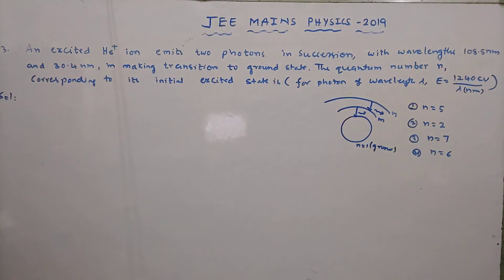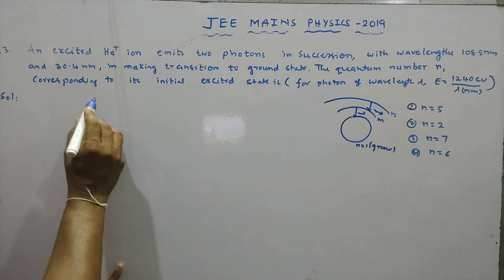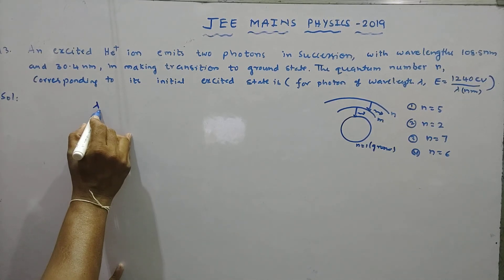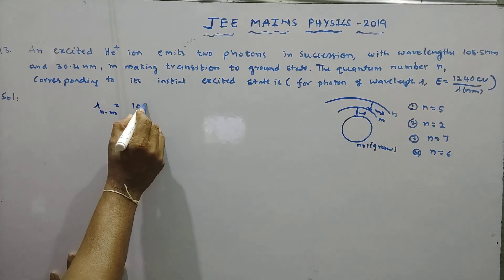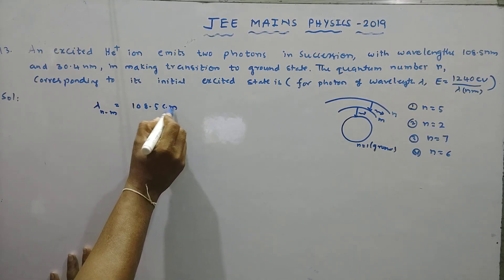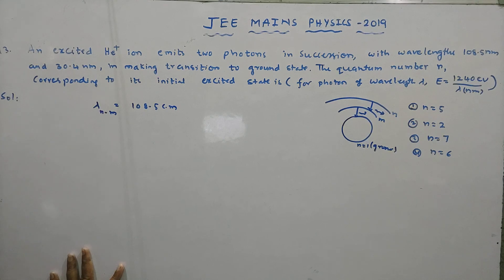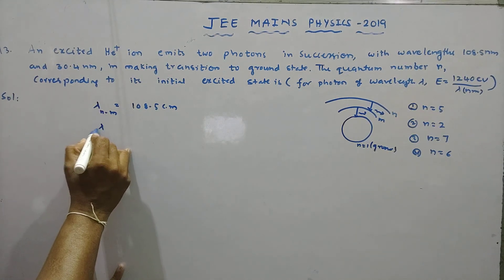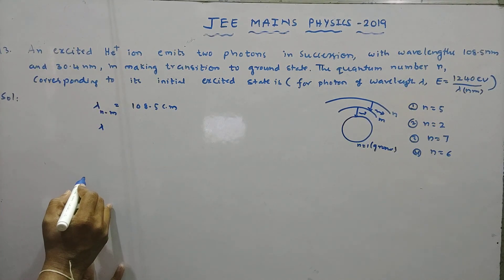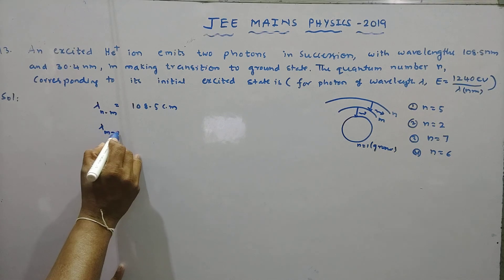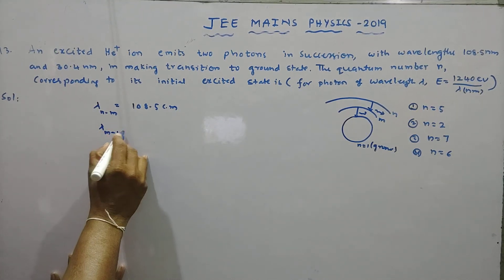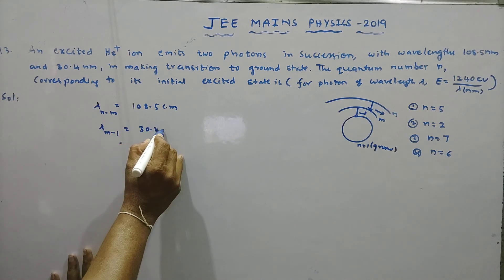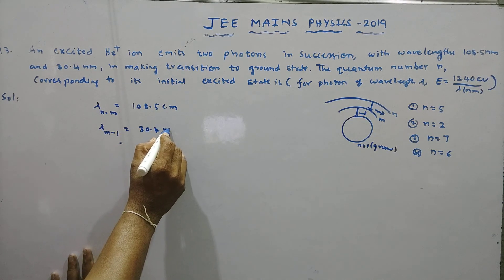The first photon wavelength corresponding to the transition n to m equals 108.5 nanometer. The second photon wavelength corresponding to the transition m to ground state, that is m to 1, equals 30.4 nanometer.